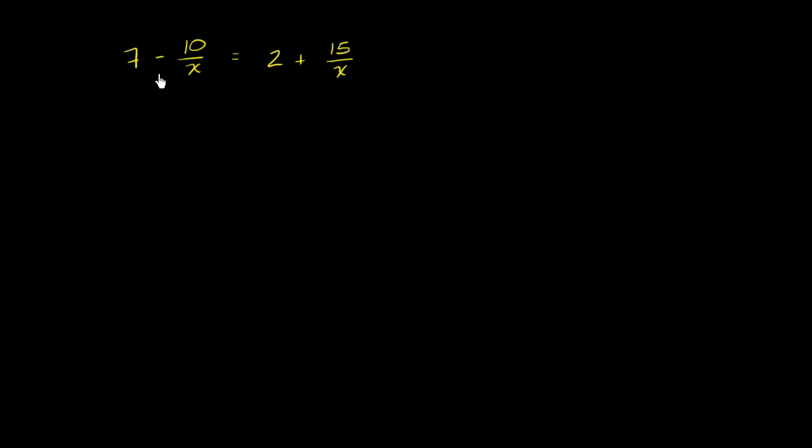So I have the equation 7 minus 10 over x is equal to 2 plus 15 over x. And so this isn't the type of equation that you might think you're used to solving. But I'll give you a few moments to see if you can solve it on your own.